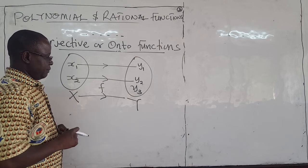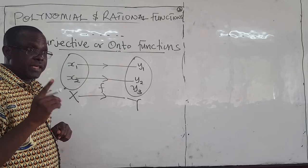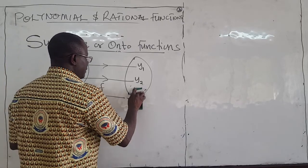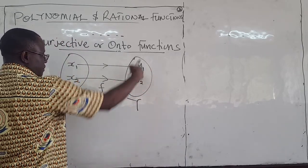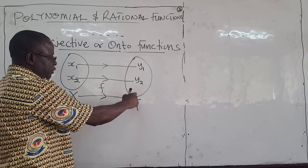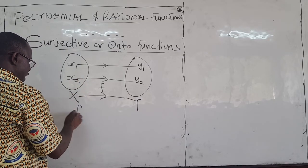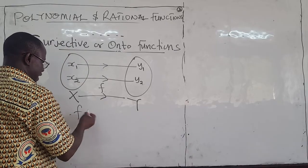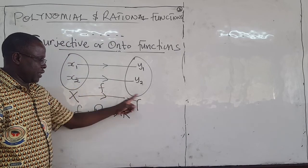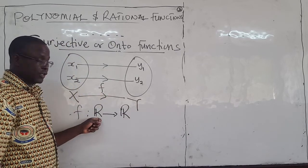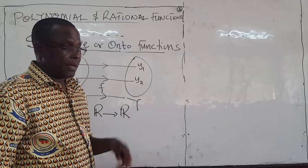That is really the basic idea of what onto and surjective functions are. For onto functions, the range must be equal to the co-domain. In other words, if I pick any element in Y, I must find a corresponding element in X. Often, if you are not told otherwise, assume that f is mapping from the space of real numbers to the space of real numbers — so Y will be all real numbers and X will be all real numbers.